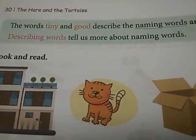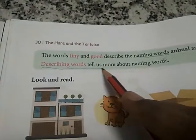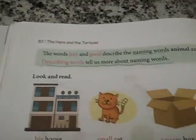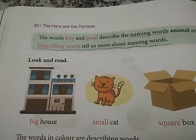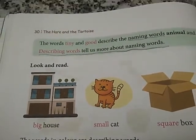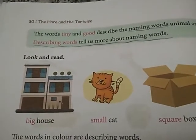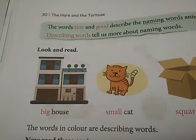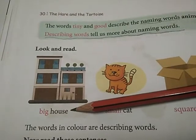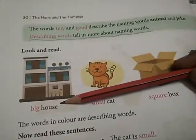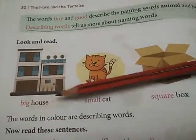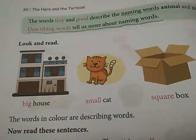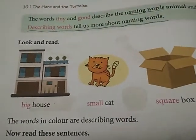Describing words tell us more about naming words. Noun or naming words — dono ka matlab ek hi hota hai. Clear, beta? To — big house, small cat, square box. Ye jo words hain — house, cat, box — ye nouns hain. Aur jo words color mein hain — woh kya hain? Describing words. Kya inko kya kar rahe hain? Describe kar rahe hain. The words in color are describing words.